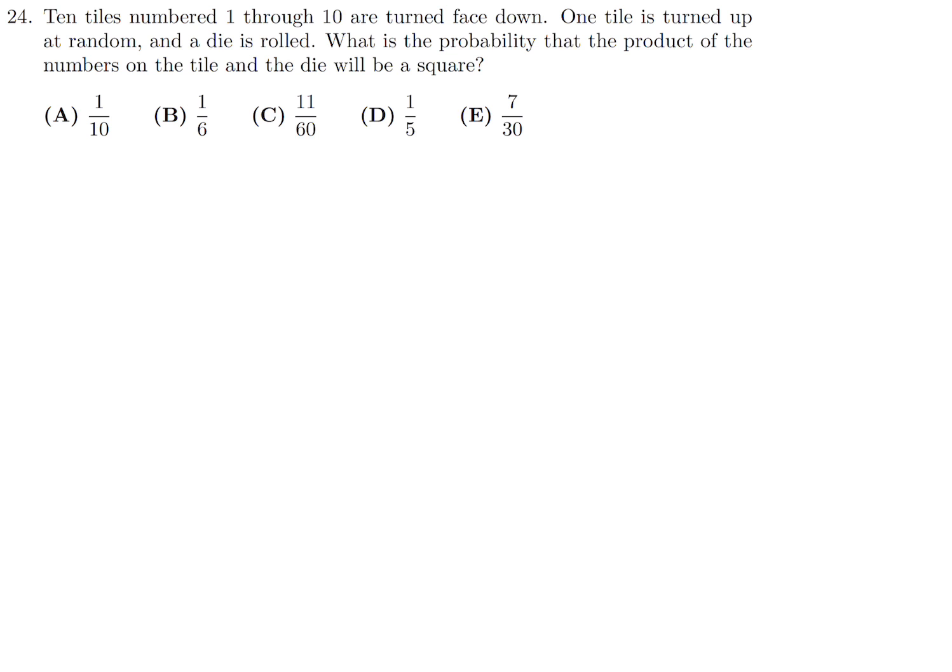10 tiles numbered 1 through 10 are turned face down. One tile is turned up at random, and a die is rolled. What is the probability that the product of the numbers on the tile and the die will be a square? So 1 through 10 are the numbers on the tiles, and I'm assuming that this is a fair die. So it has 1, 2, 3, 4, 5, 6. So you've got to choose one of these and one of these and get a product.